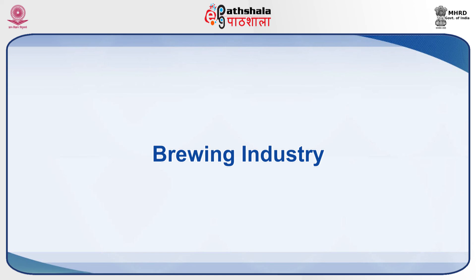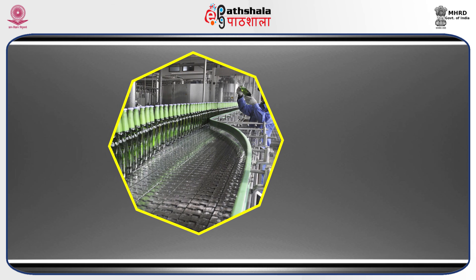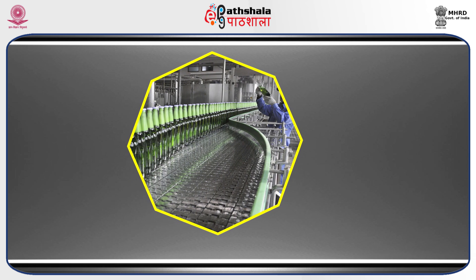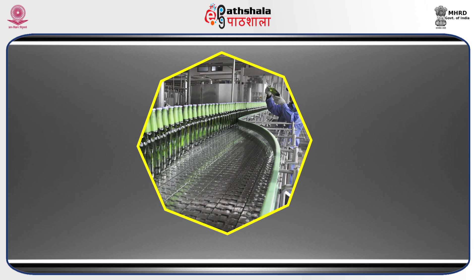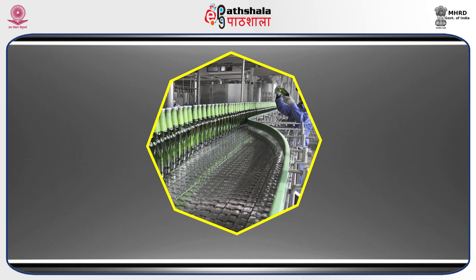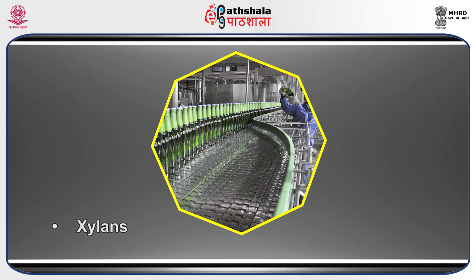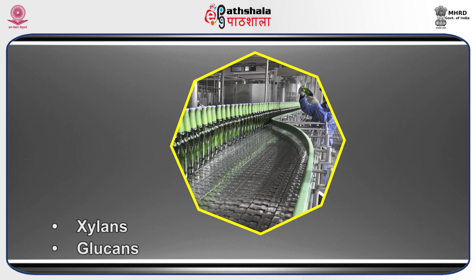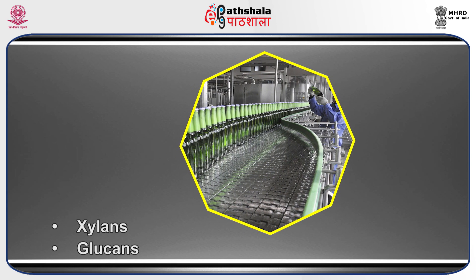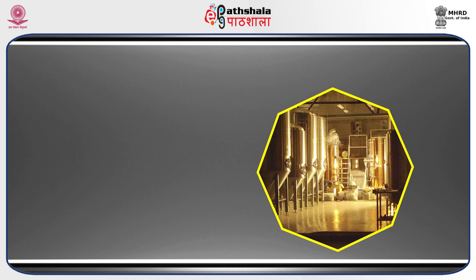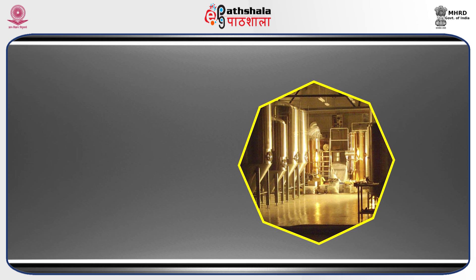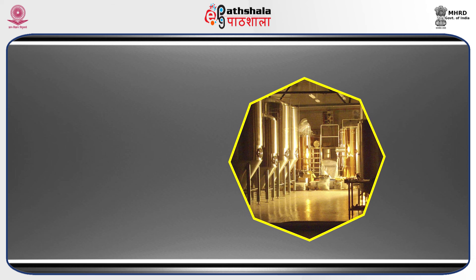In the brewing industry, especially in beer production, enzymes are extensively used. Enzymes reduce viscous polysaccharides like xylan and glucans occurring in beer by acting as filtration improvers. In the manufacturing of light beer, enzymes remove the carbohydrate present and induce chill-proofing.